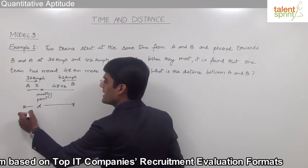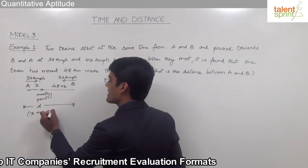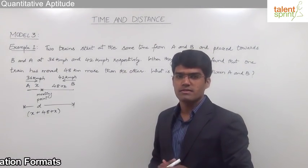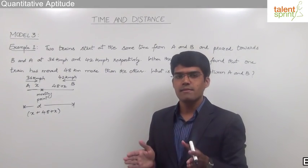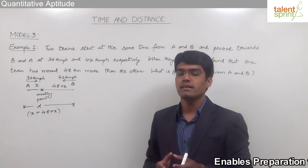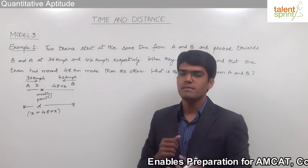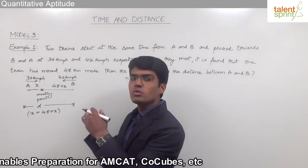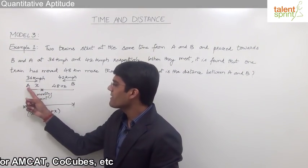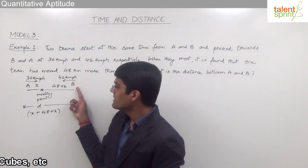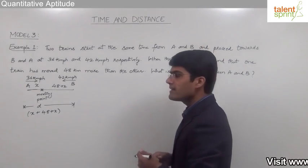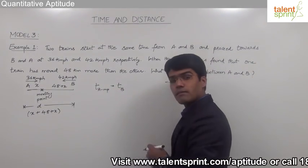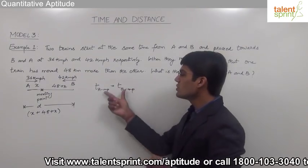The total distance D can be taken as x plus 48 plus x, that is 2x plus 48. One important point to understand for these types of questions: whenever two bodies start at the same time and move towards each other in opposite directions, the time taken by them to reach the meeting point will be the same. So the time taken by the first train to reach the meeting point will be equal to the time taken by the second train to reach the meeting point.